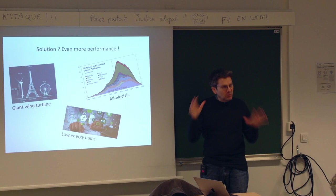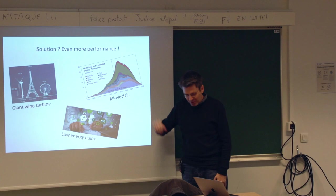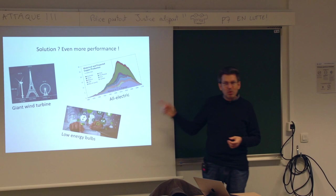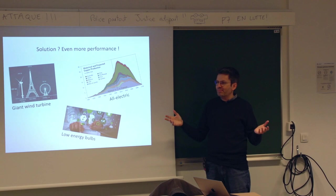Another example: low-energy bulbs — those twisted ones consuming less energy. But to consume less energy, they have mercury inside. So you consume less energy but you diffuse a pollutant in the homes of everyone. That's where I say it's really an occult performance. We are drugged by performance; we can't question it anymore.